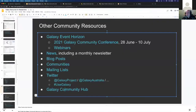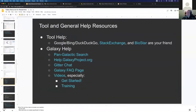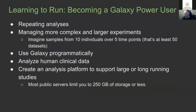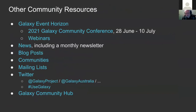The last one is the Galaxy Community Hub at galaxyproject.org. This is the hub for the community with lots and lots of resources. Scrolling down the landing page, there are links out to everything: the newsfeed, newsletters, events page, Twitter, videos, blogs, careers - there's a lot of demand for people who understand Galaxy, so we have a careers page as well. Now our last topic is learning to run: becoming a Galaxy power user.